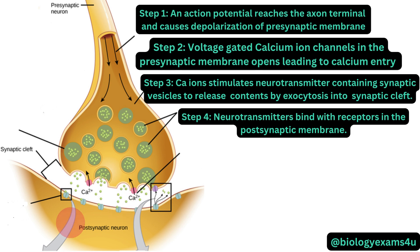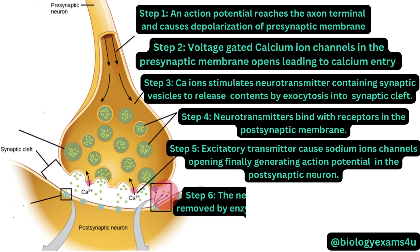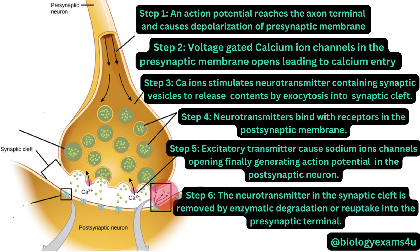Step 5: if it is an excitatory transmitter, sodium ion channels open up and cause depolarization of the postsynaptic membrane, generating an action potential in the postsynaptic neuron. Step 6: the neurotransmitter in the synaptic cleft is removed by enzymatic degradation or reuptake into the presynaptic terminal.